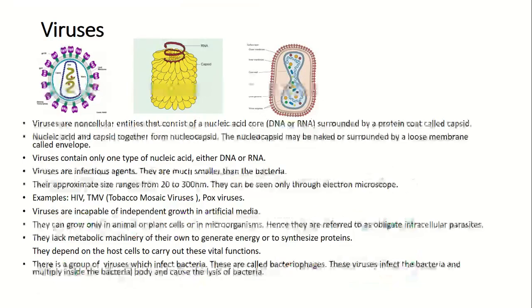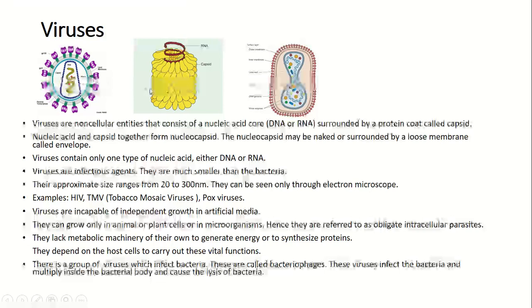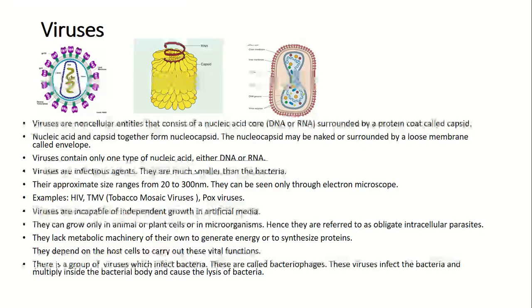Viruses — here we can see some examples: HIV (human immunodeficiency virus), TMV (tobacco mosaic virus), and pox virus. Viruses are noncellular entities that consist of a nucleic acid core. The nucleic acid may be either DNA or RNA, and is surrounded by a protein coat called a capsid. The nucleic acid and capsid together form the nucleocapsid, which may be naked or surrounded by a loose membrane called an envelope.